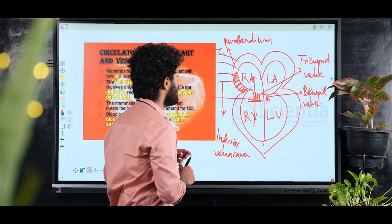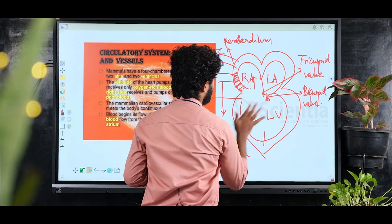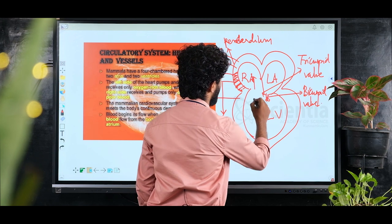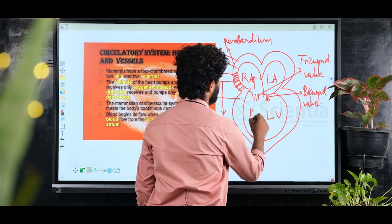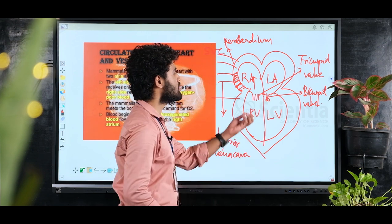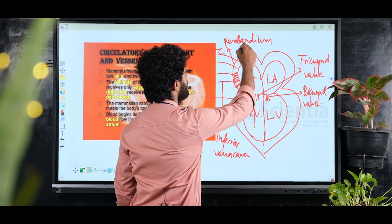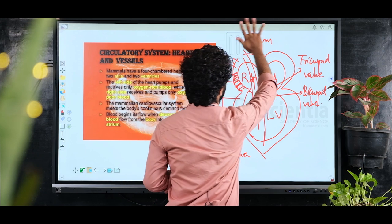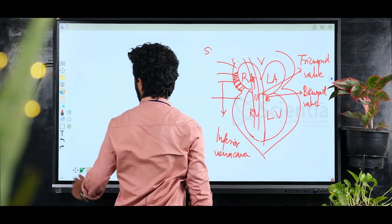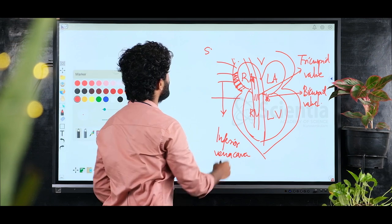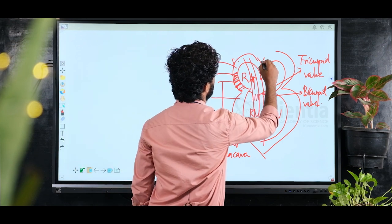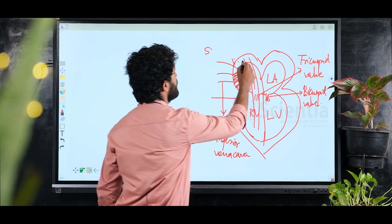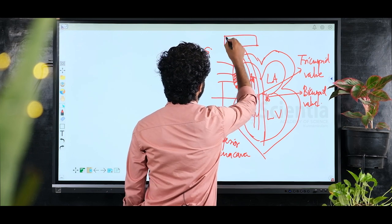The right side of the heart carries deoxygenated blood. From the right ventricle, this deoxygenated blood is sent to the lungs for oxygenation.